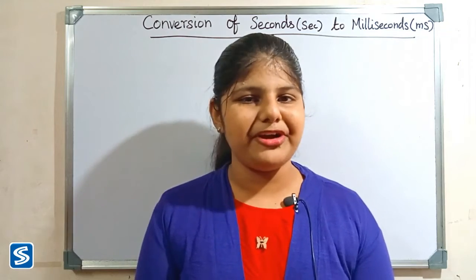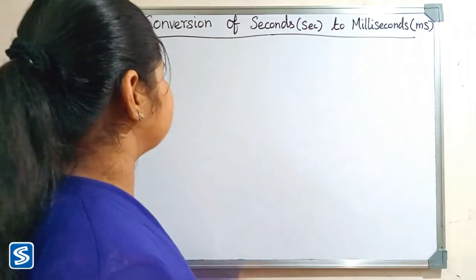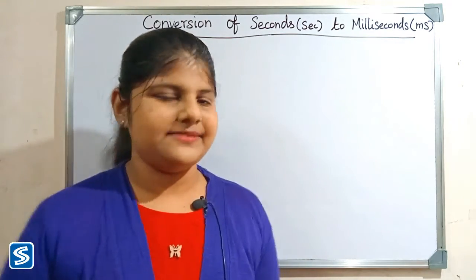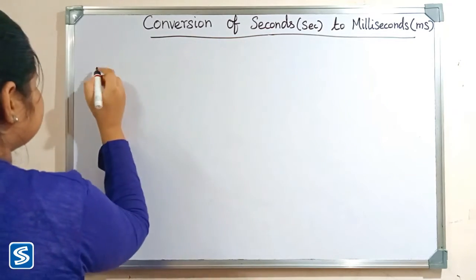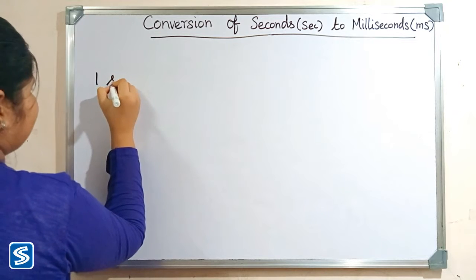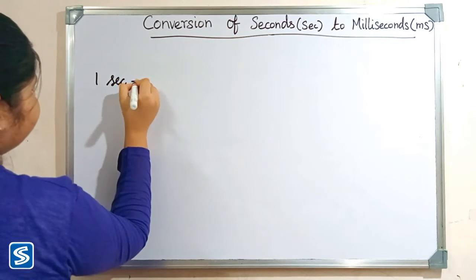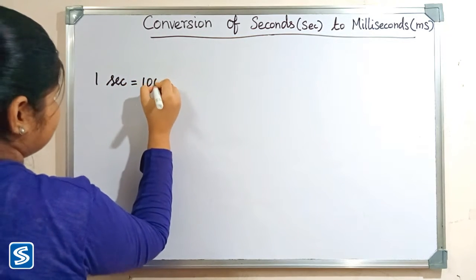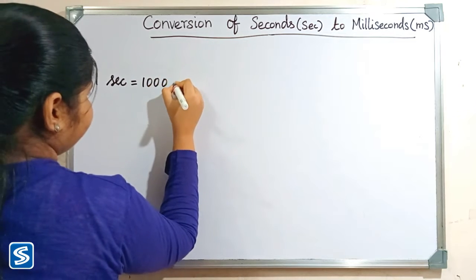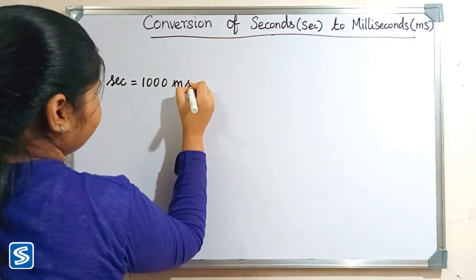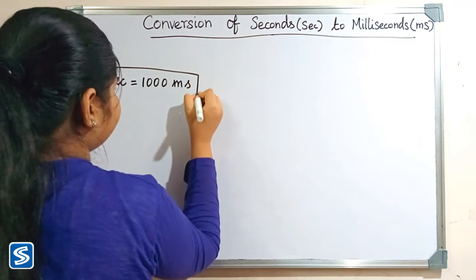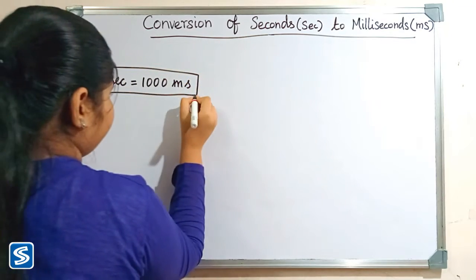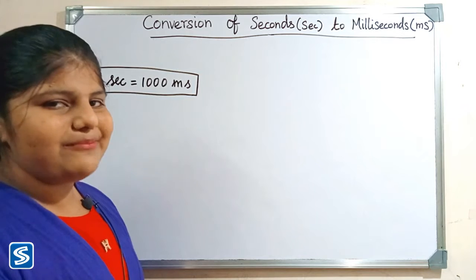Hi friends, welcome to So Much channel. In this video I'm going to teach how to convert seconds into milliseconds. The formula for converting seconds into milliseconds is: one second is equal to one thousand milliseconds.